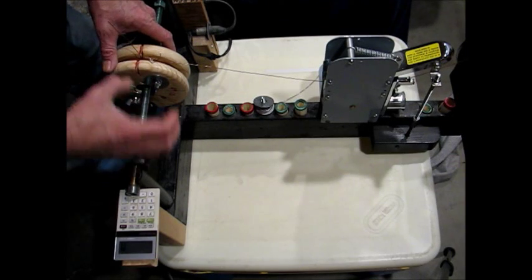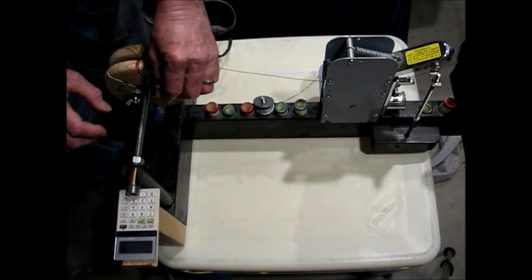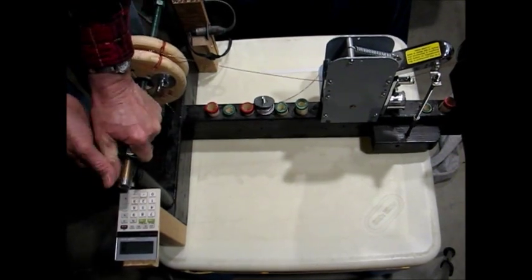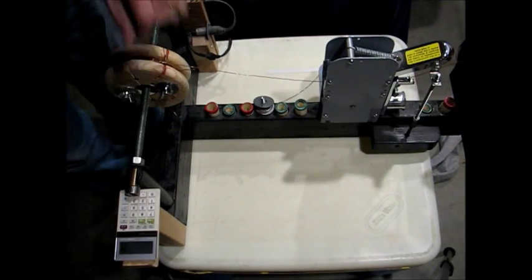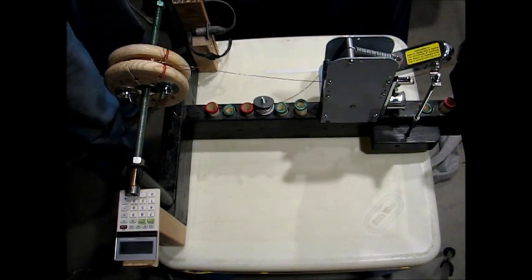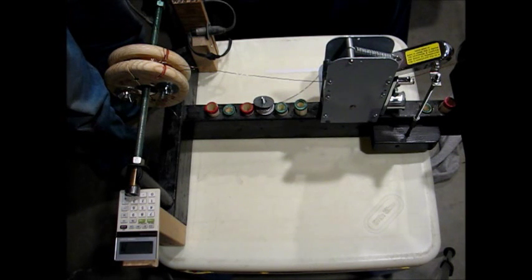Then I take the two end pieces off and slide the coil off. Then lift this up, slide the coil off, slide that back down. And I'm basically ready for the second coil construction.